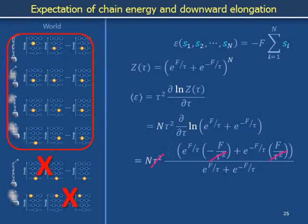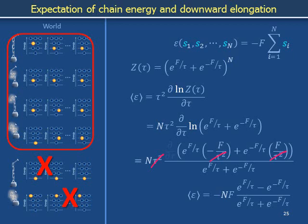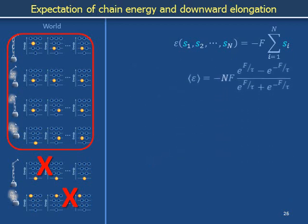These powers of tau squared cancel. Factoring out a negative sign, the expectation value of the energy thus reads minus N times F, times e to the F over tau minus e to the minus F over tau, all of that over e to the F over tau plus e to the minus F over tau. The average energy we have calculated is the average of the expression we initially used to describe the energy of our system in terms of the downward extension of the chain, meaning the downward displacement of the weight from the nail.